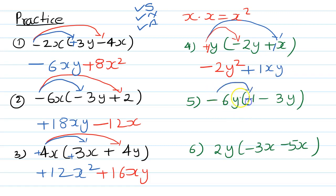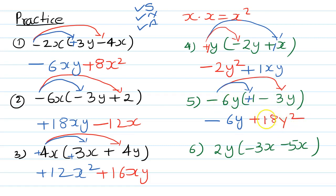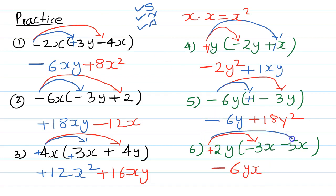Next: plus times minus becomes minus; if there is no number, 1 is implied; 1 times 2 is 2; y times y is y squared — giving minus 2y squared. Then plus 1y times plus: 1 times 1 is 1; x times y is xy — giving plus xy. Then minus 6y times plus: minus times plus becomes minus; 6 times 1 is 6; giving minus 6y. And minus 6y times minus 3y: minus times minus becomes plus; 6 times 3 is 18; y times y is y squared — giving plus 18y squared. For the last term, plus times minus becomes minus; 2 times 3 is 6; y times x is xy. And plus 2 times minus 5: plus times minus becomes minus; 2 times 5 is 10; y times x is xy.